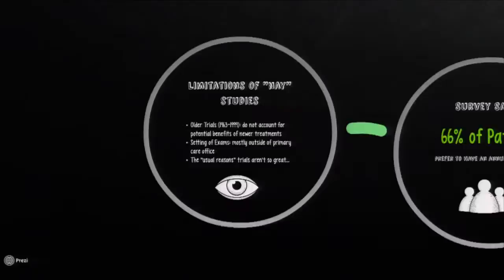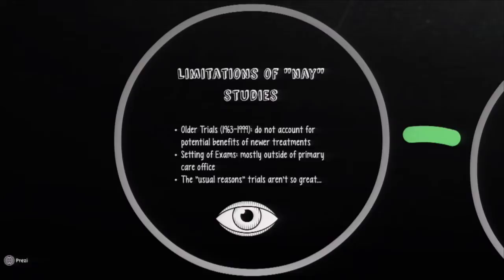Let's look at the limitations of these negative studies. A lot of the trials referenced in that meta-analysis are older, done anywhere from 1963 to 1999. They really don't account for potential benefits of newer advancements and treatments that we have — screening tests and things like that. We have come a long way over the decades since 1963 in what we can do to help improve people's care, and these studies simply don't take that into account.